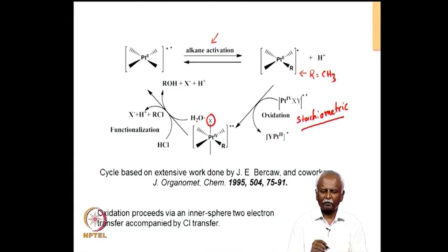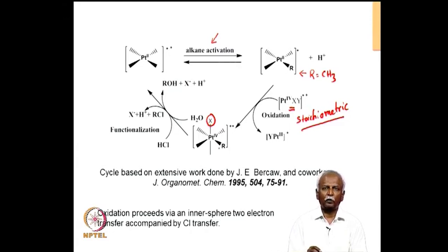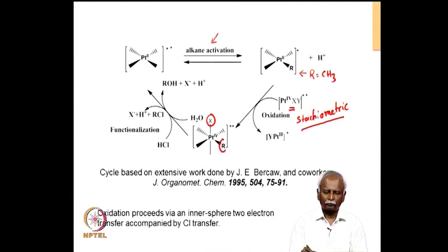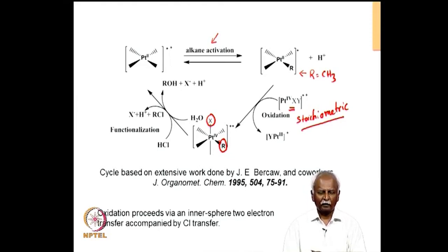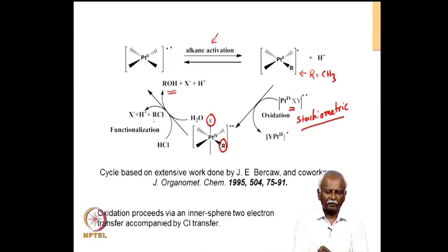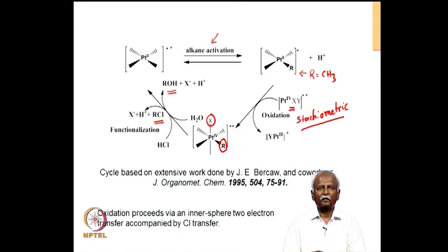The platinum(IV) oxidizes the platinum(II) species in what might be considered an inner sphere 2-electron transfer. Two electrons are transferred from platinum(II) to platinum(IV), and at the same time an anionic X group is transferred from platinum(IV) to the platinum(II) species. This results in a platinum(IV) complex with both an X group and an R group. We can then do a reductive elimination from this platinum(IV) species eliminating R-X. If X is OH and chloride concentration is low, you get R-OH; otherwise you get R-Cl. This regenerates the platinum(II) complex and the catalytic cycle continues.